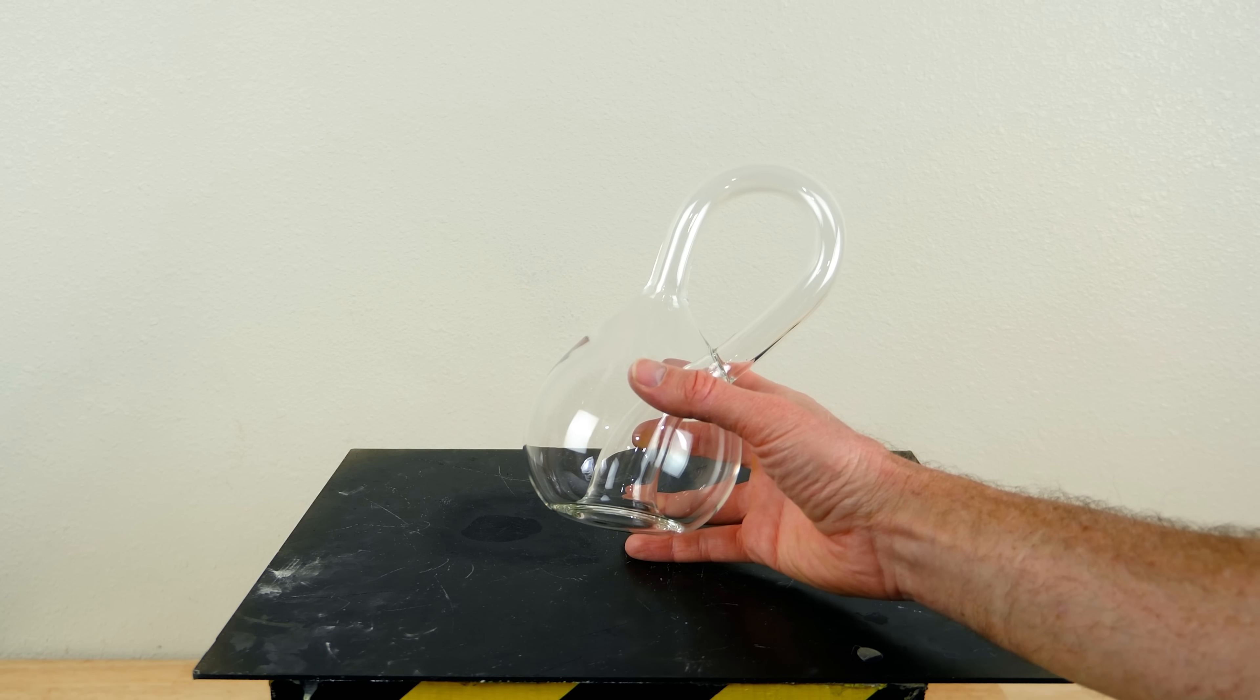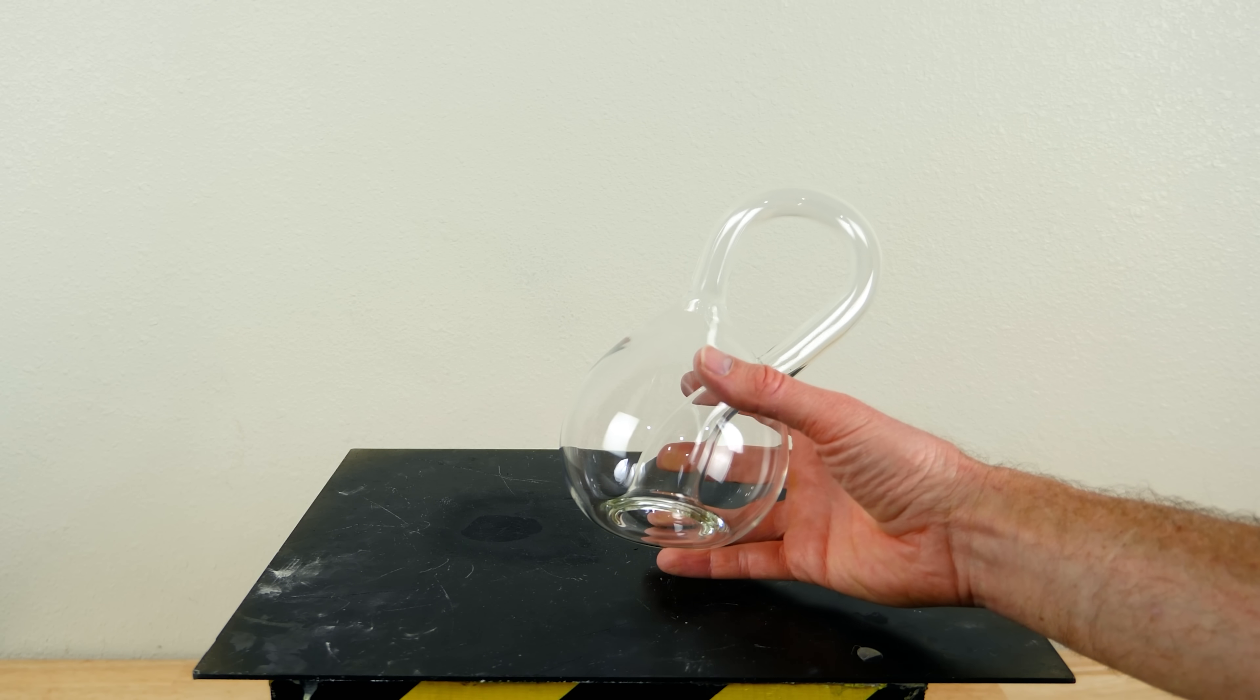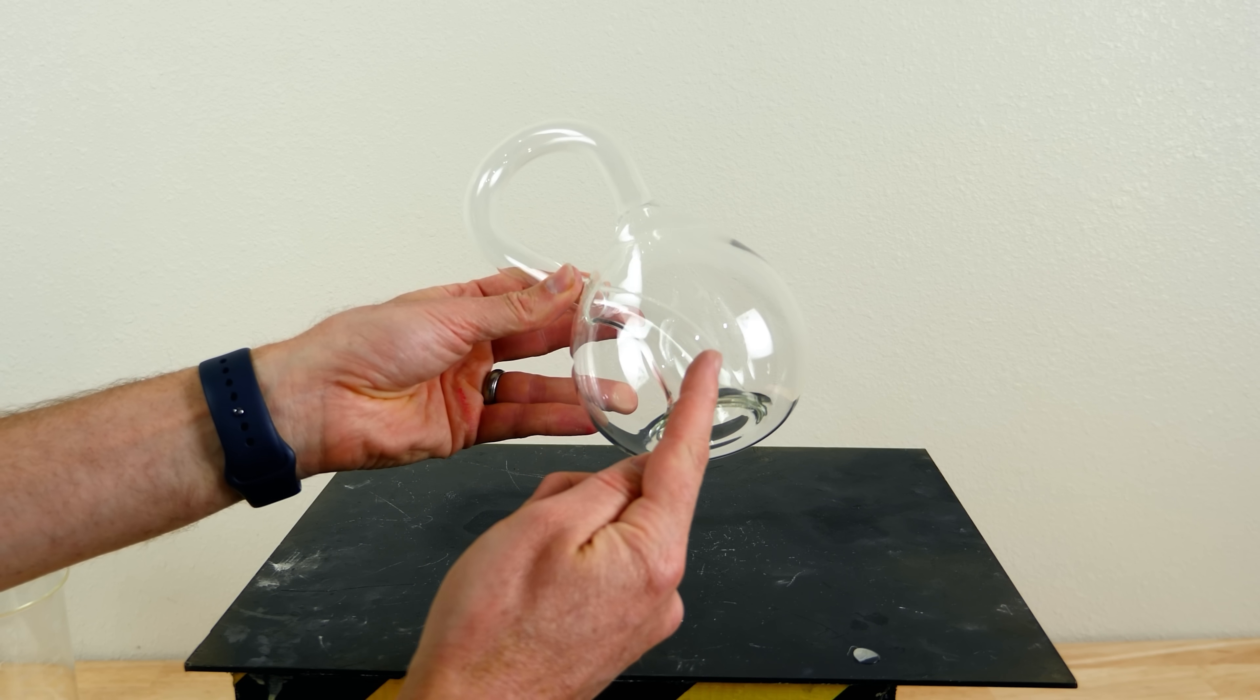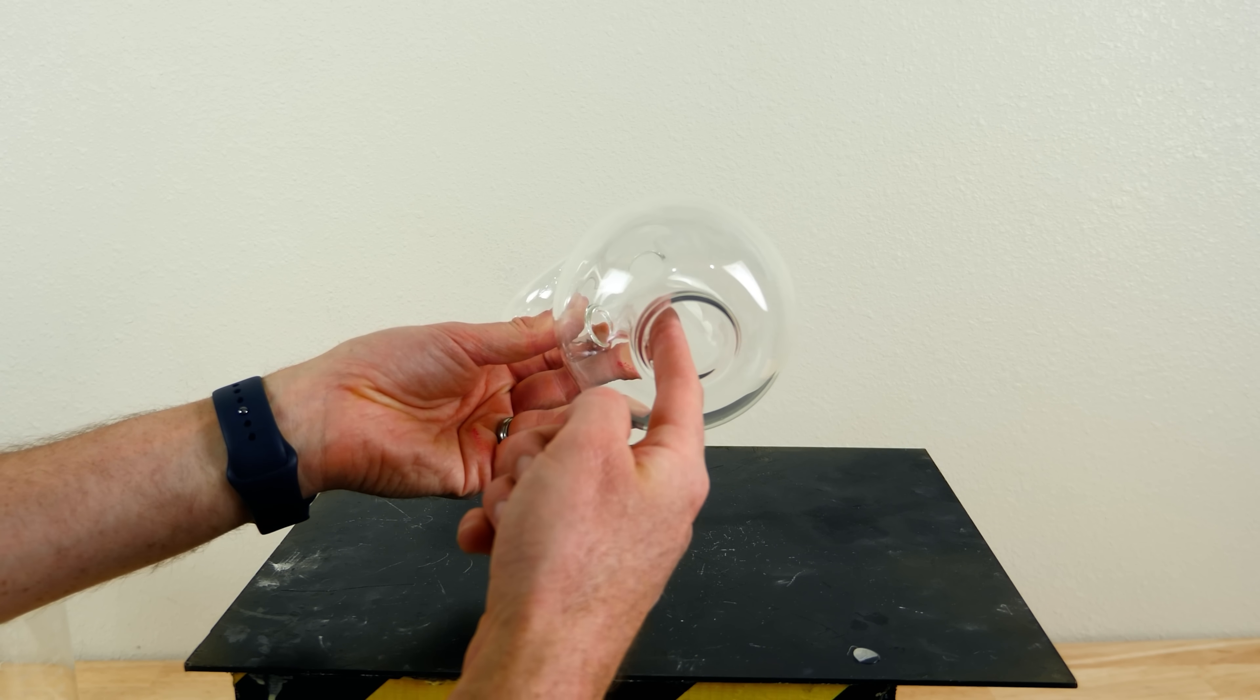But let's look at the Klein bottle. Where does the outside world end and the inside world start? There's no fine line or edge to divide it into an inside or an outside.